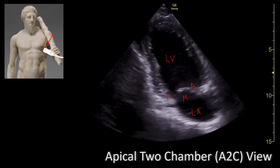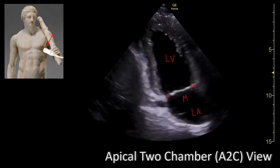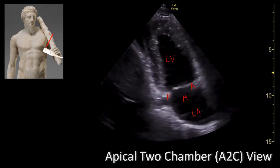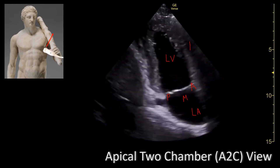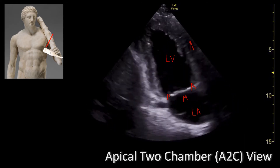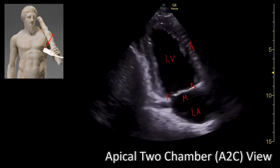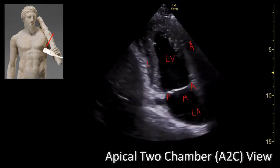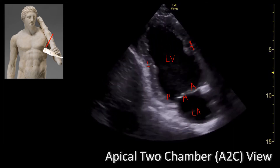Let's talk about the walls of the ventricle. On the right side of the image you have the anterior wall of the ventricle, and right opposite to it you have the inferior wall of the ventricle.